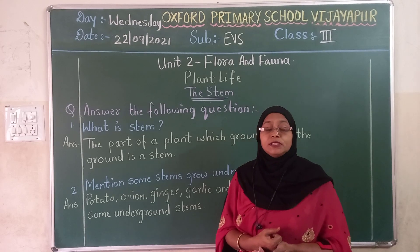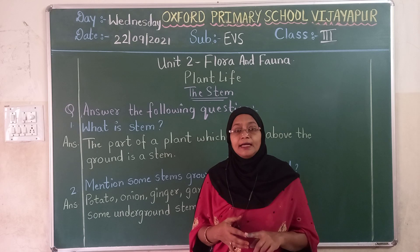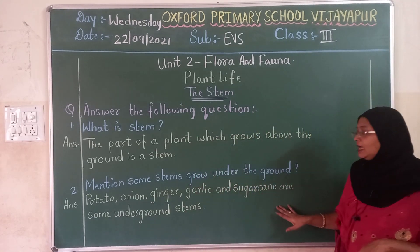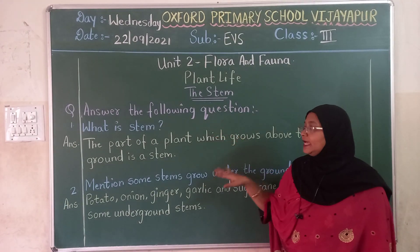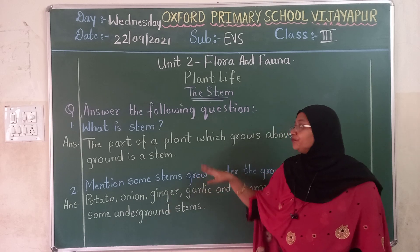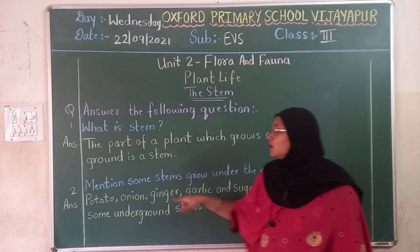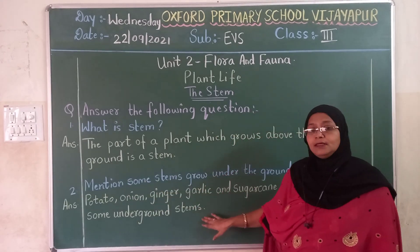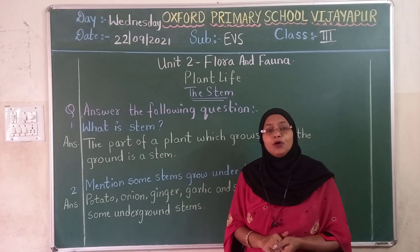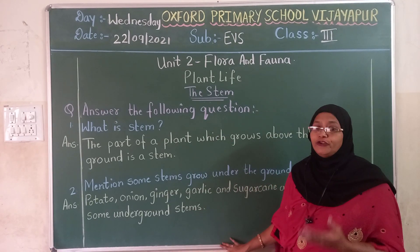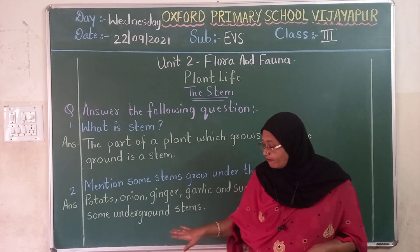So mention some underground stems — they are potato, onion, ginger, garlic, sugar cane. They are underground stems. Now see children, question one: what is stem? And question number two. After writing question and answer you have to leave one line, then question number two, answer, leave one line. So first copy these two question answers in your notebook. I will read the book and give you the next one. You have to write very neatly. First copy it down.